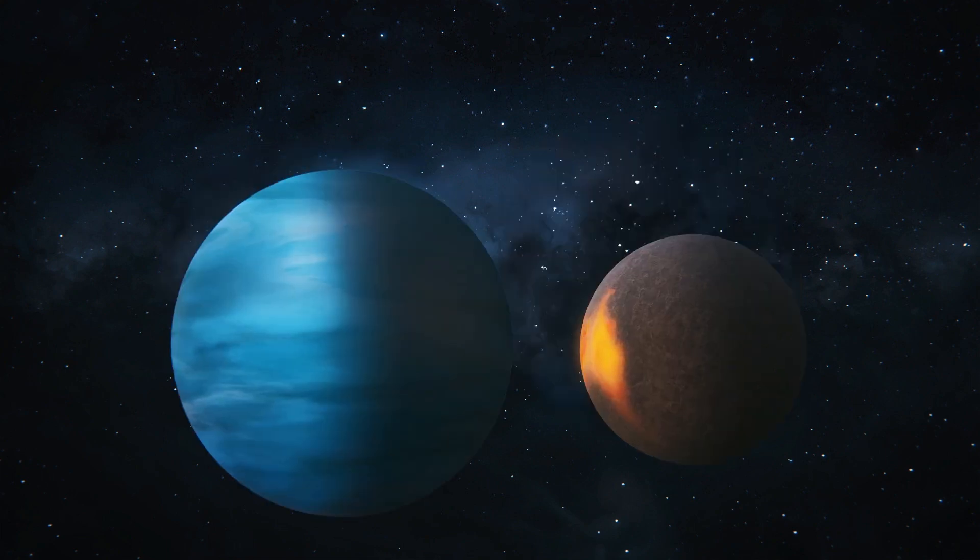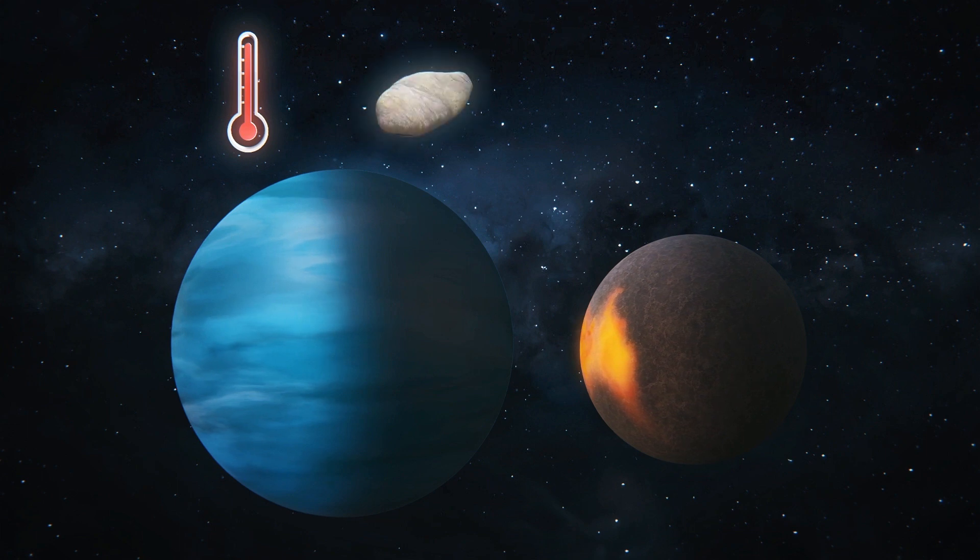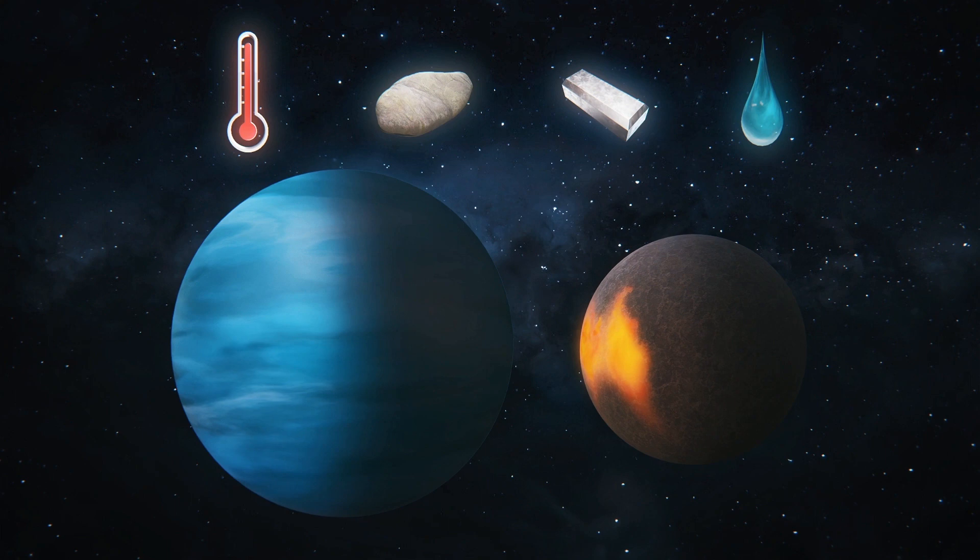Both TOI 1266b and C have similar temperatures and are believed to be of similar densities and are comprised of about half rocky and metallic material and half water, the researchers suggested. This makes them half as rocky as Earth or Venus, but much more rocky than Neptune or Uranus.